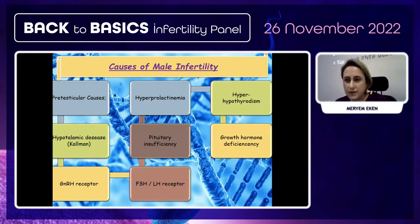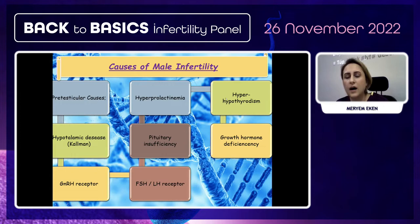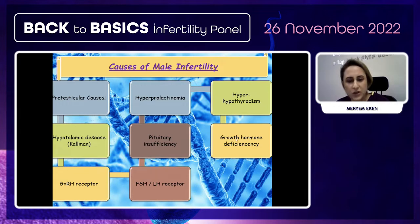For male infertility, we separate the causes into three categories. Pre-testicular causes are hormonal problems including hyperprolactinemia, hyperthyroidism, hypothalamic disease such as Kallmann syndrome, pituitary insufficiency, growth hormone deficiency, or receptor defects.